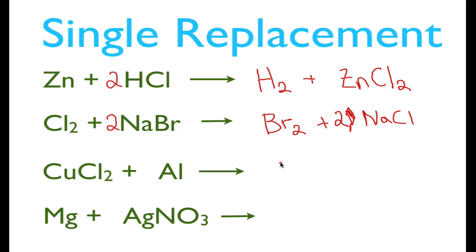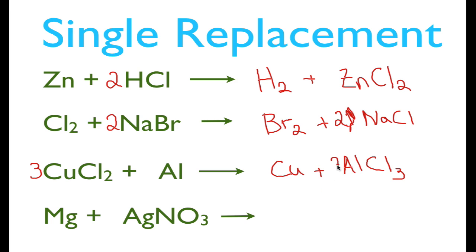So the aluminum is our single element and copper chloride is our compound. Aluminum kicks the copper out, giving us copper by itself plus aluminum chloride. Aluminum forms a +3 charge and chlorine is -1, so the formula is AlCl₃. We have three chlorines on one side and two on the other, so we use a coefficient of 3 on AlCl₃ and 2 on Al, giving us six chlorines each way. That means we need 3 coppers on the reactant side: 3 CuCl₂.